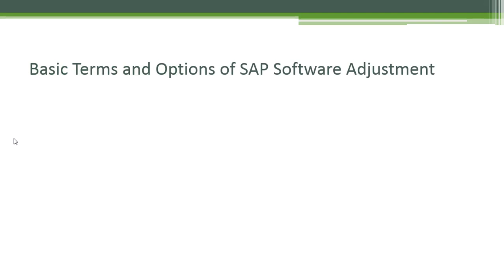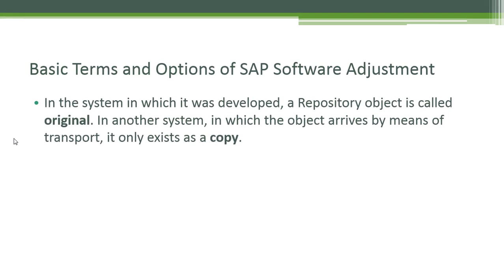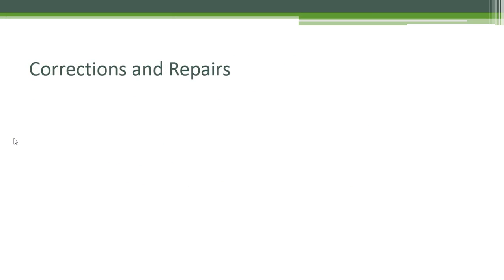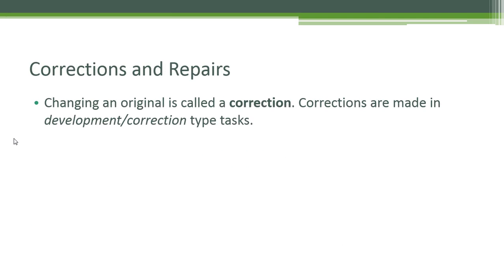Basic terms and options of SAP software adjustment: In the system in which a repository object was developed, it is called the original. In another system where the object arrives by means of transport, it only exists as a copy. Usually, changes are only to be made to the original, and these changes are then transported to subsequent systems to change the corresponding copies, ensuring repository objects are consistent in all systems.